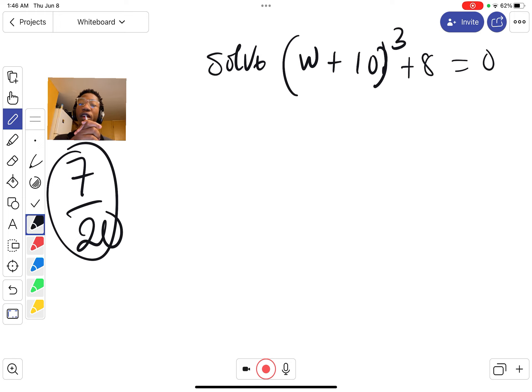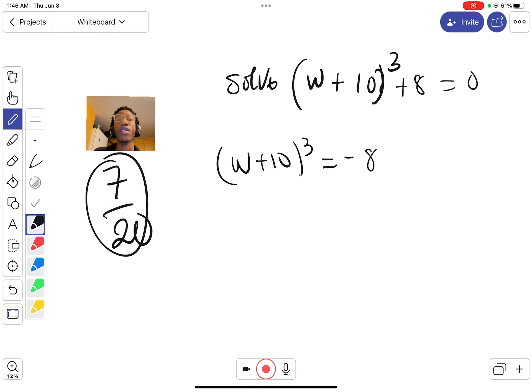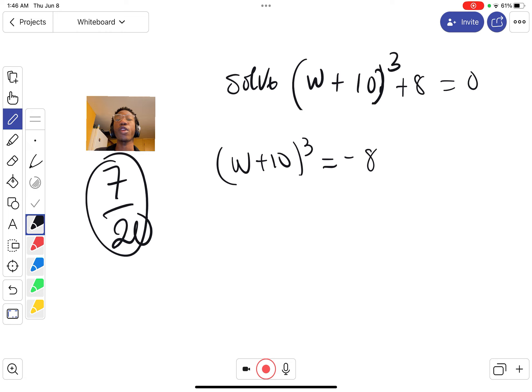Pretty much the same as the previous problem with different numbers and variables. First, we're gonna isolate our terms. It's gonna be (w + 10)³ on one side and negative 8 on the other, because we're changing the sign when moving from one side to the other.